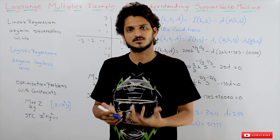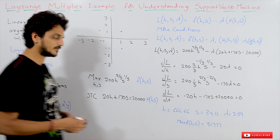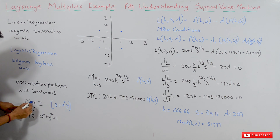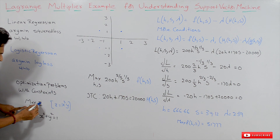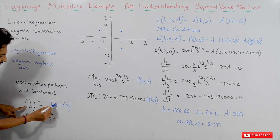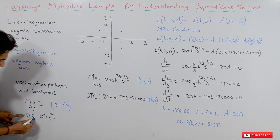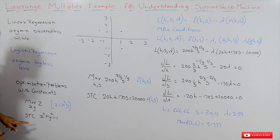That's why we are discussing these concepts. Coming to our example: the optimization problem is maximum of z = x²y — at what x, y value we are having maximum z. This is subjected to the constraint x² + y² = 1.